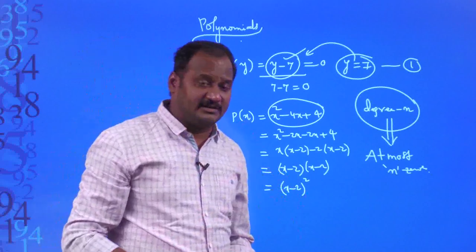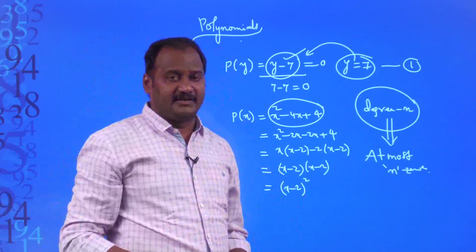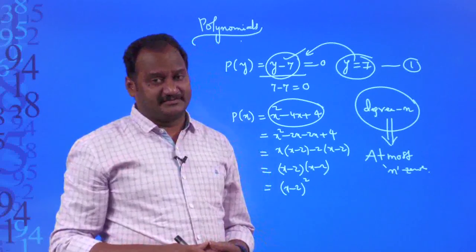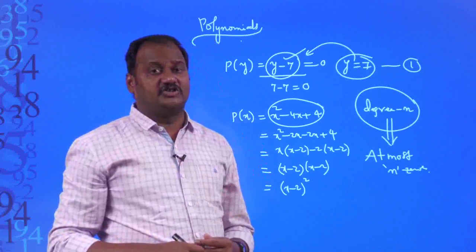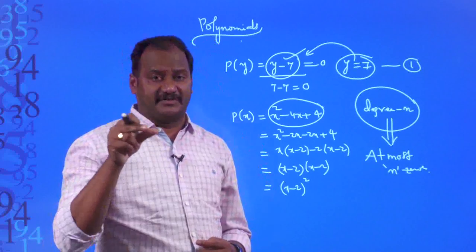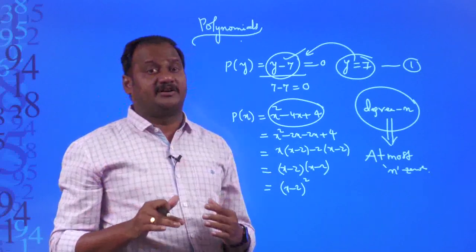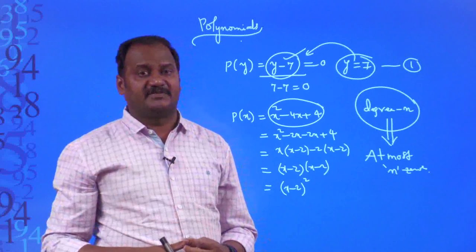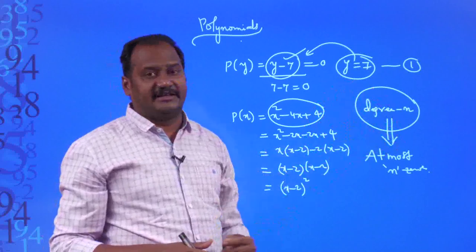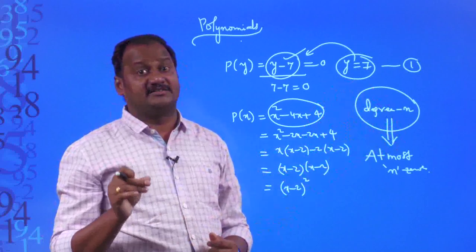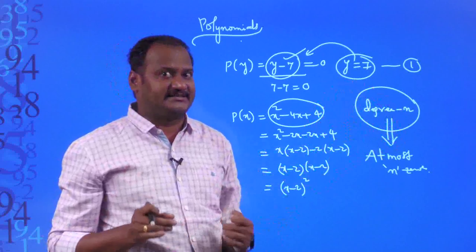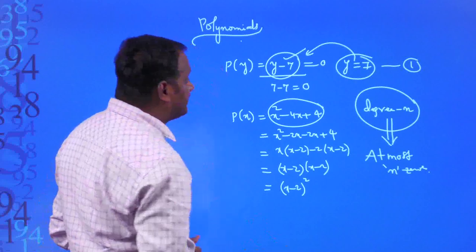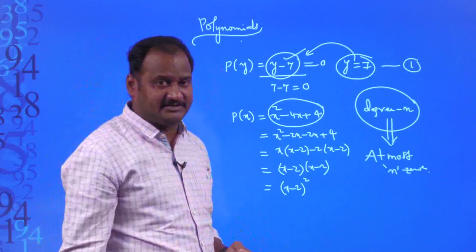So to summarize: zeros of a polynomial are the values of the variable for which the polynomial becomes zero. A polynomial of degree n has at most n zeros. Now we will discuss second degree, third degree, and fourth degree polynomials.